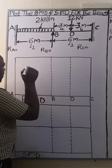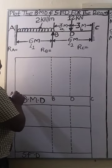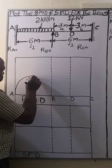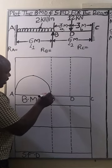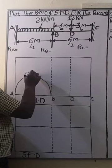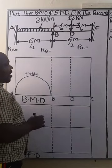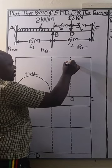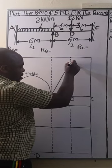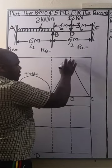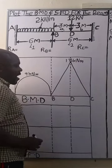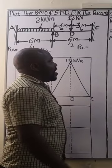The bending moment is 9 kilonewton-meters, and the bending moment diagram is going to be a smooth curve since that span is loaded with a UDL. We have 9 kNm, then at D we have 18 kilonewton-meters, and that is how it is going to be — 18 kilonewton-meters at that value.